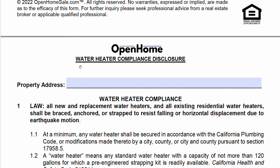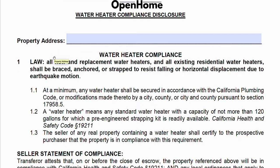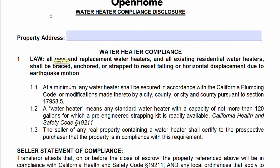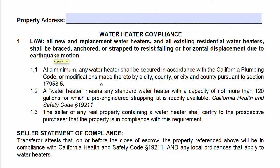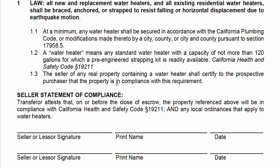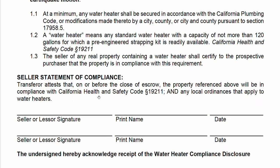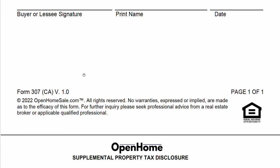Water Heater Compliance — water heaters need to be strapped in California due to earthquake risk. The form explains the requirement and confirms the seller is in compliance. You'll put the property address, it's a statement of compliance, the seller signs, the buyer signs, and we're done with the water heater.